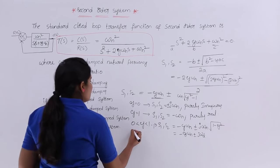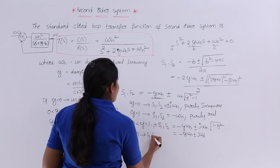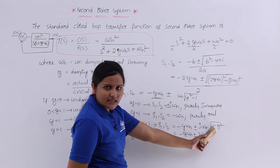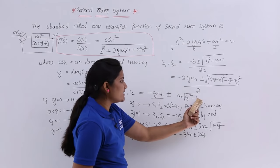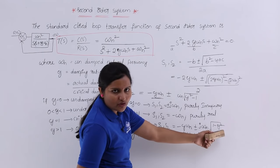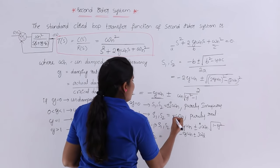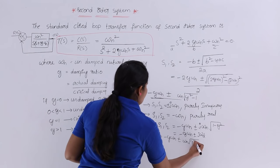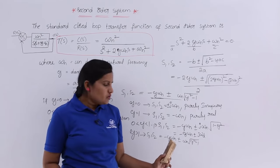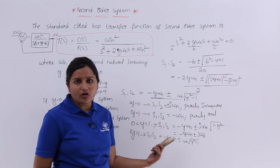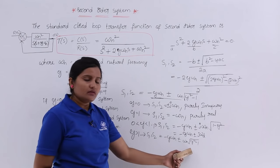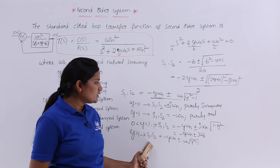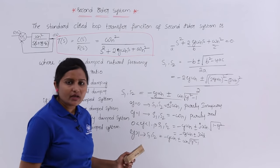For the over-damped case where zeta is greater than 1, S1 and S2 equals minus zeta omega_n plus or minus omega_n root of zeta squared minus 1. Since zeta > 1, the term under the root is positive and real, so there is no imaginary component. We do not need to take j as common here. The roots are both real but unequal — their magnitudes are not equal to each other.